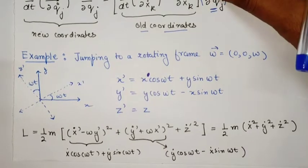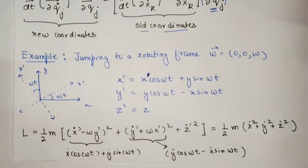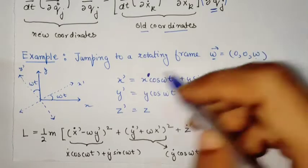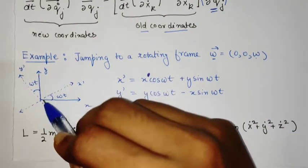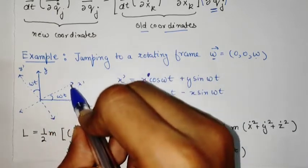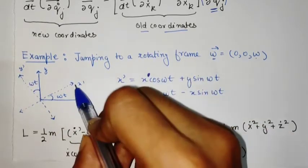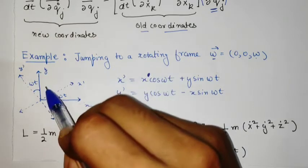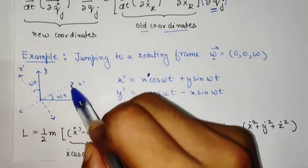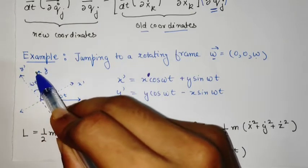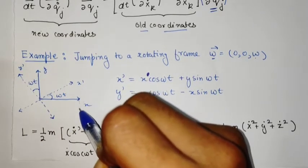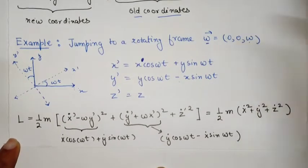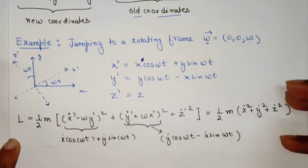We now apply this to the rotating frame. Suppose the frame rotates with constant angular velocity ω. The x and y axes rotate into each other to give x′ and y′. We have x′ = x cos(ωt) + y sin(ωt) and y′ = y cos(ωt) − x sin(ωt).